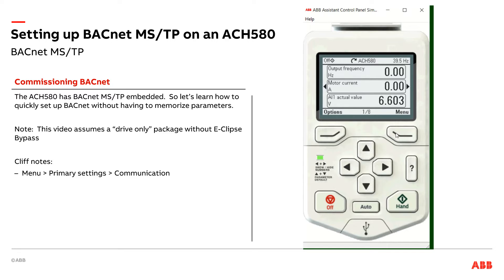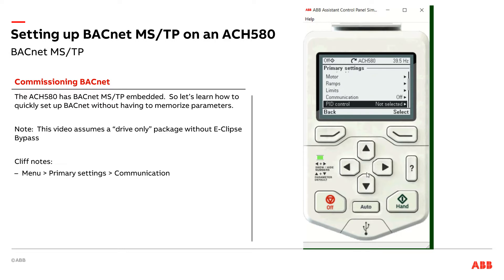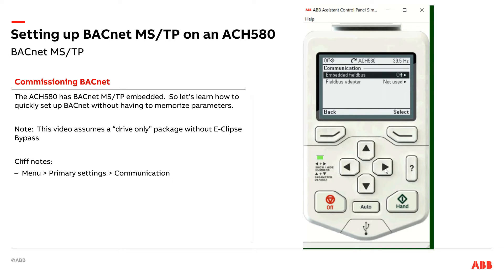The first thing I'm going to do is hit Menu and go into Primary Settings. For all you controls contractors out there who do a little bit with ABB drives but not a whole lot, don't worry about memorizing parameters. Just remember these basic steps: Primary Settings, then scroll down to Communication — it's right here on the main tree — hit Select, and go into the Communication Setup and EFB, which stands for Embedded Fieldbus.